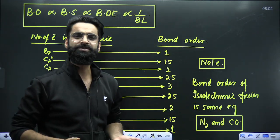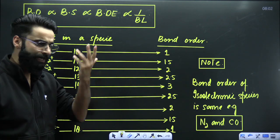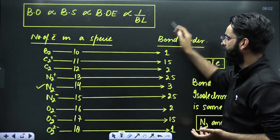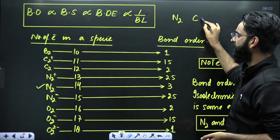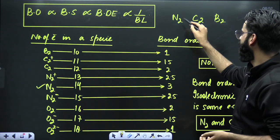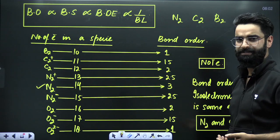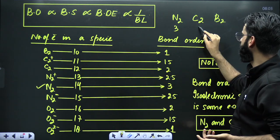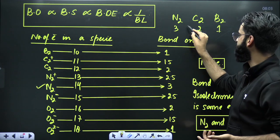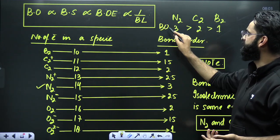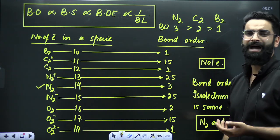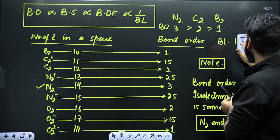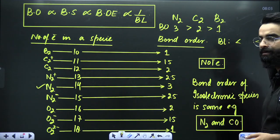Once you get the bond orders, you can easily compare bond strengths as well. For example, if you have to compare the bond lengths of N2, C2, and B2 — you calculate their bond orders: N2 is 3, C2 is 2, and B2 is 1. So the bond order follows that order. Now, whatever the order of bond order is, the reverse of that is going to be the order of bond length — you just have to interchange the comparison symbols.